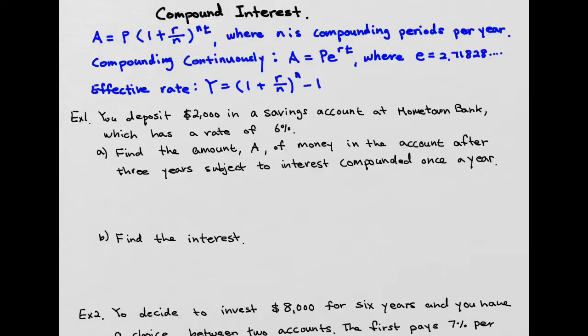If it's compound monthly, there are 12 months, so N becomes 12. If you have compound daily, that's going to be 365.